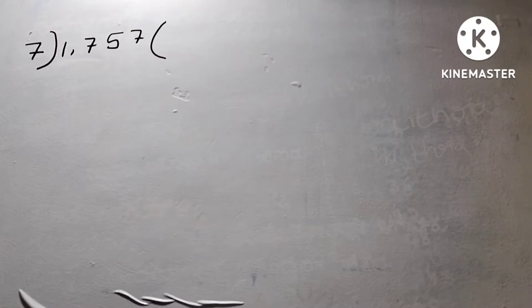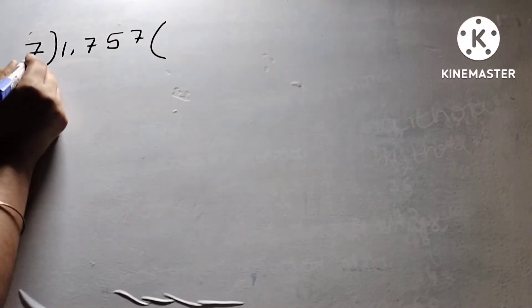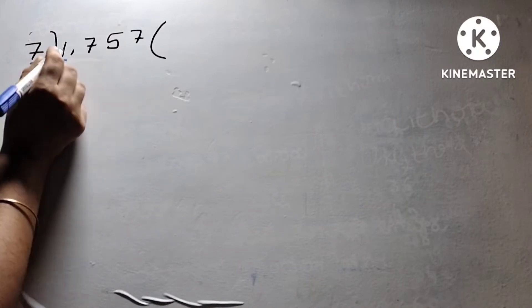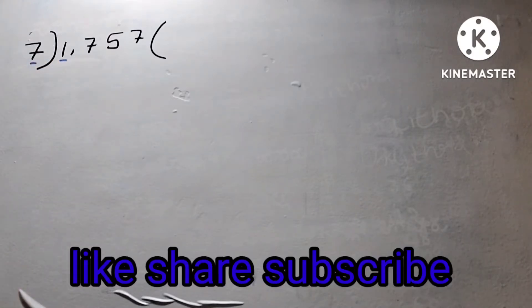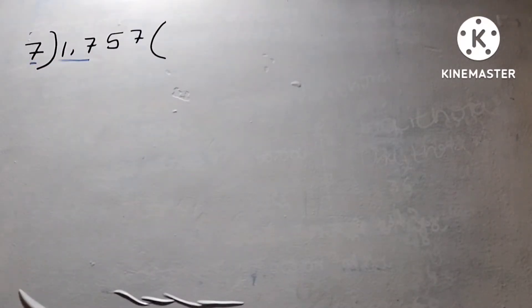Divide 1,757 by 7. Observe the first number: 1, 7. You can divide 17 by 2 — so the first two numbers are 17.